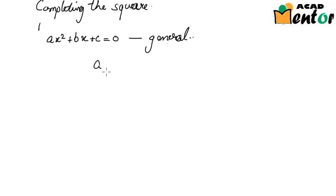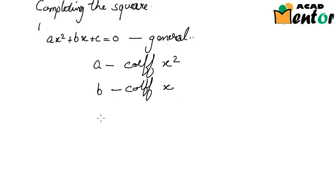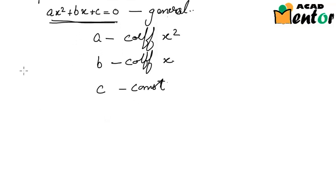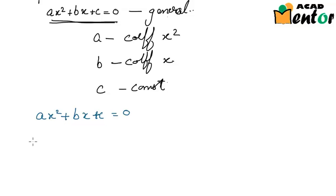Here, A is the coefficient of X², B is the coefficient of X, and C is the constant term. Now let's see if we can find the roots of this equation using the completing the square method. The first step is to ensure that the coefficient of X² is a perfect square. We can either multiply or divide the full equation by the coefficient of X², which is A. Here we will try dividing the full equation by A.